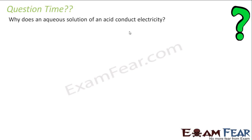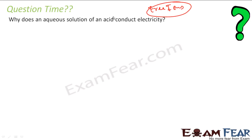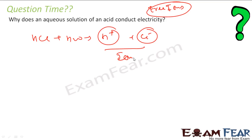Now the question is: why does an aqueous solution of an acid conduct electricity? We know that for acid or anything to conduct electricity, you should have free ions. Anything that has free ions will conduct electricity — free ions or free electrons. The moment you put HCl into water, it gives ions, and these ions are responsible for conducting electricity.